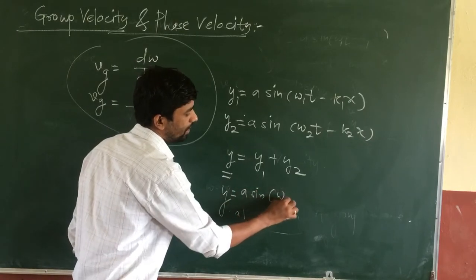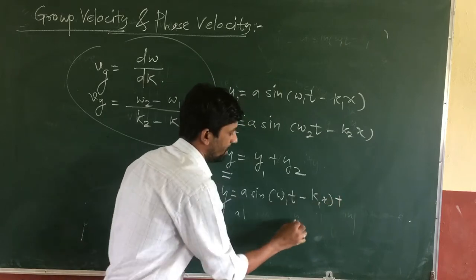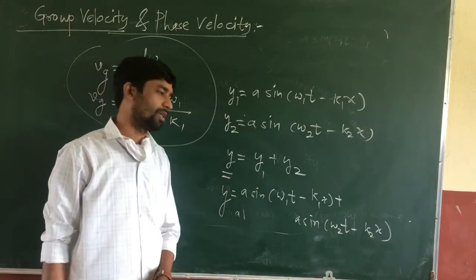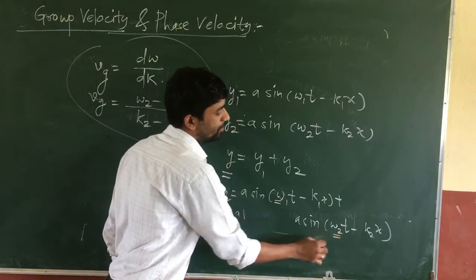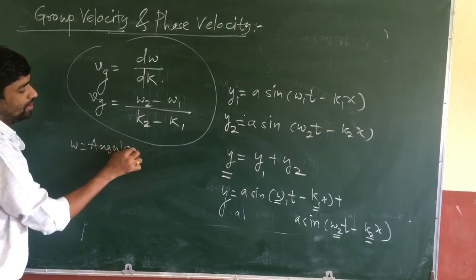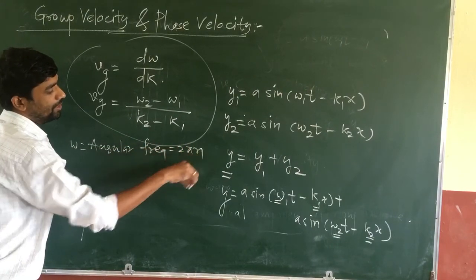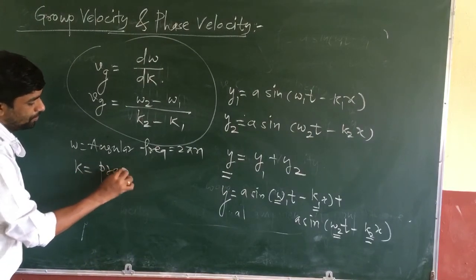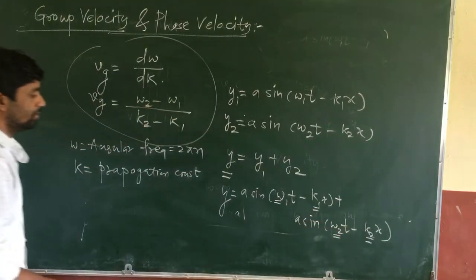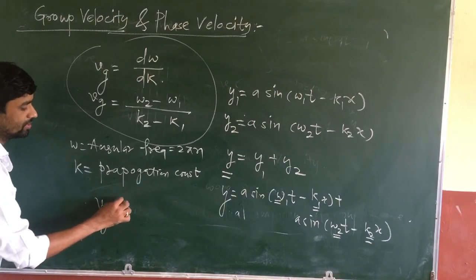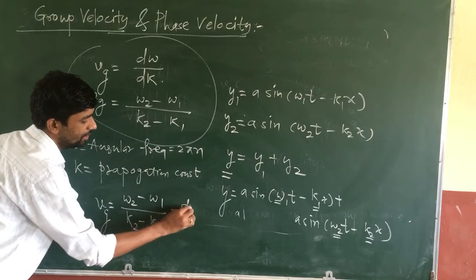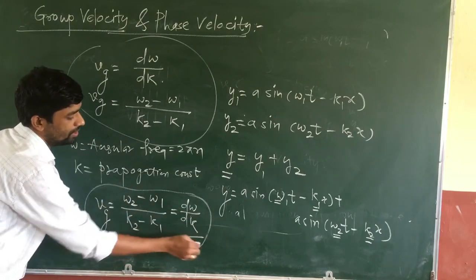So we solve: y = a sin(ω₁t − k₁x) + a sin(ω₂t − k₂x). Simplifying this equation gives two terms involving ω₁, ω₂, k₁, and k₂. Here ω is the angular frequency, equal to 2πn, and k is the propagation constant with values k₁ and k₂. From these two equations, group velocity vg = (ω₂ − ω₁)/(k₂ − k₁), which is written as dω/dk.